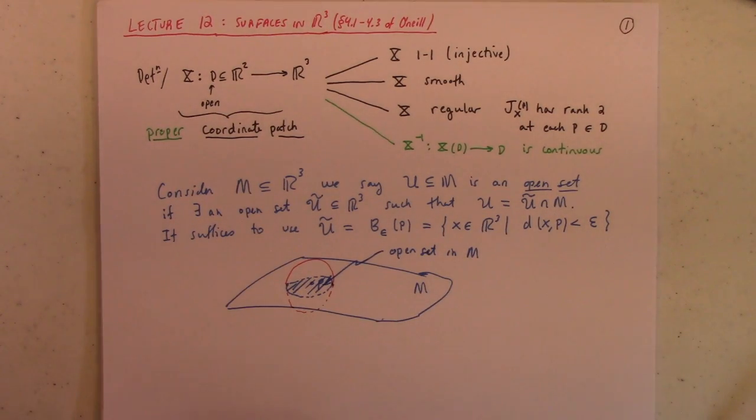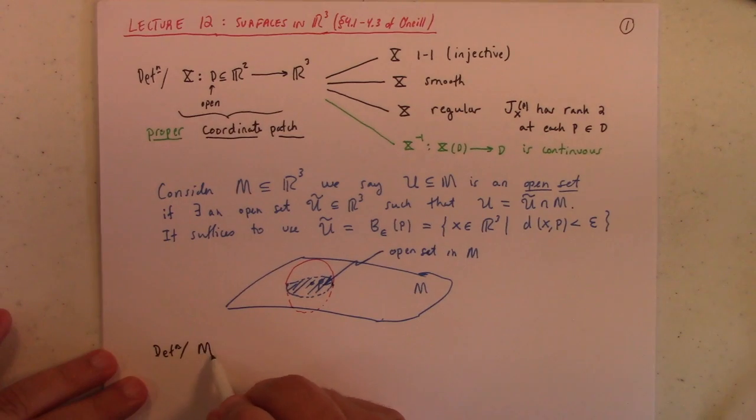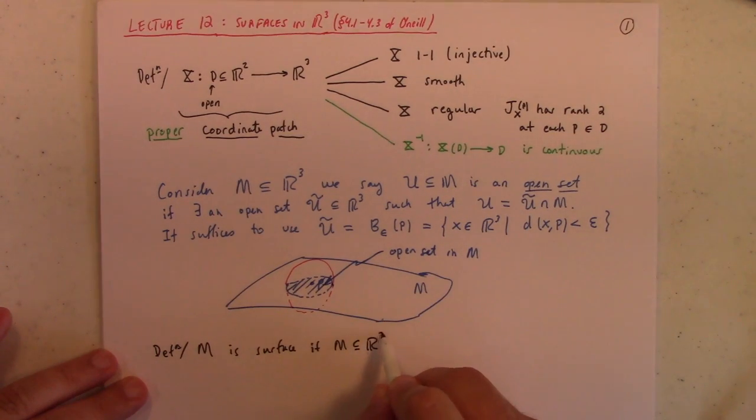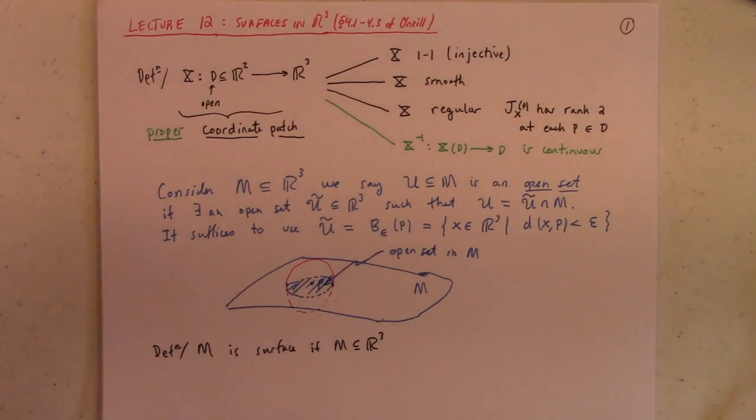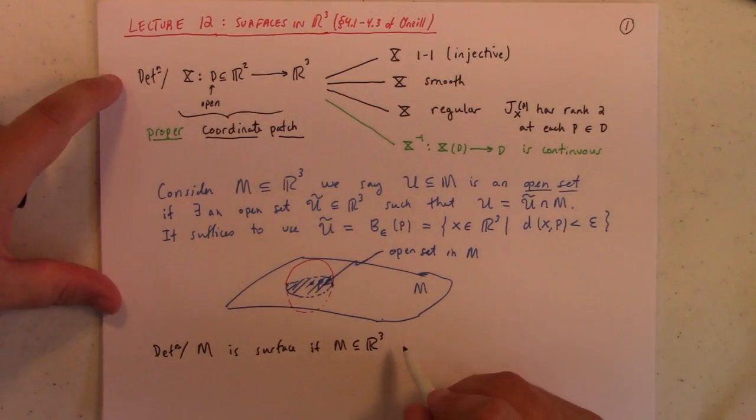Now, to say that M is a surface, what do we mean by that? Well, let me give you a definition. M is surface if M is a subset of R3. I should say it's a surface of R3. I mean, the notion of surface is more general than this, but a surface in R3.